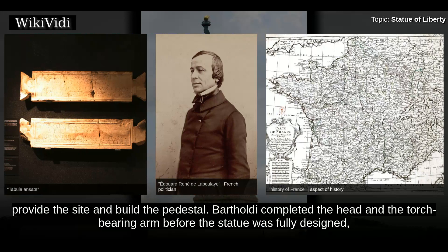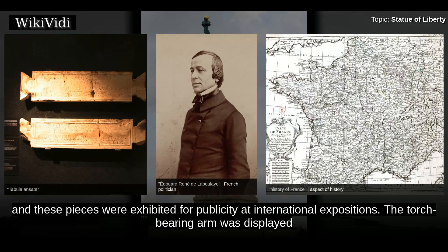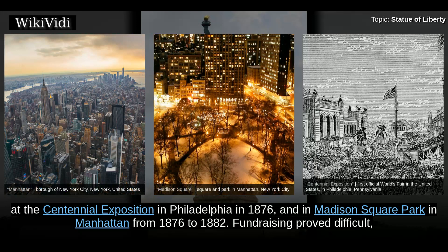Bartholdi completed the head and the torch-bearing arm before the statue was fully designed, and these pieces were exhibited for publicity at international expositions. The torch-bearing arm was displayed at the Centennial Exposition in Philadelphia in 1876, and in Madison Square Park in Manhattan from 1876 to 1882.